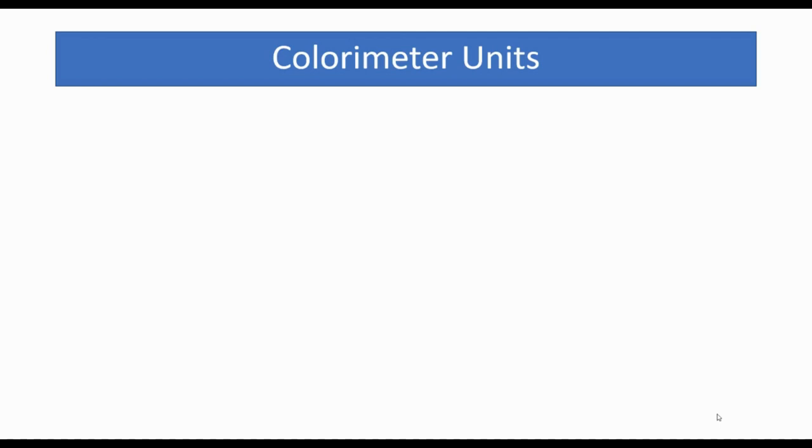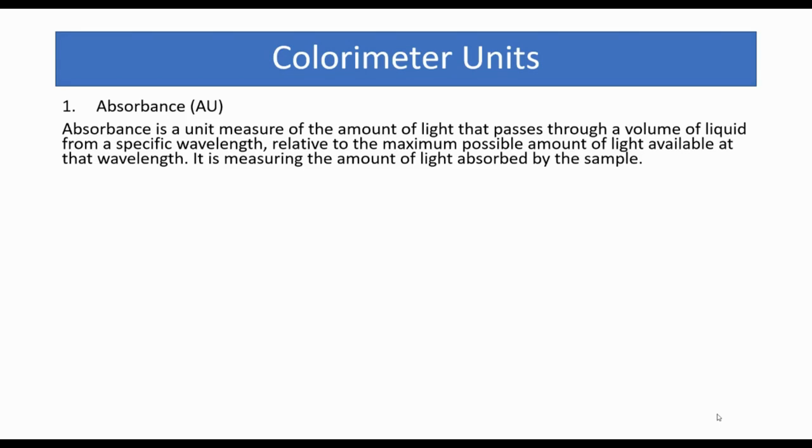Colorimeter units. There are two units. First is absorbance, which is a unit measure of the amount of light that passes through a volume of liquid from a specific wavelength relative to the maximum possible amount of light available at that wavelength. This is measuring the amount of light absorbed by the sample.